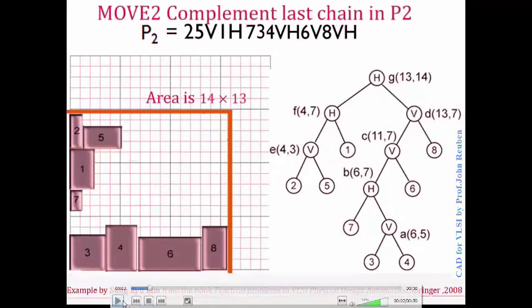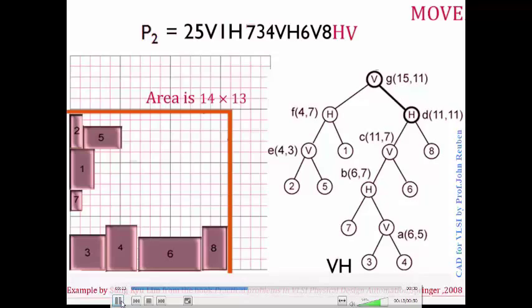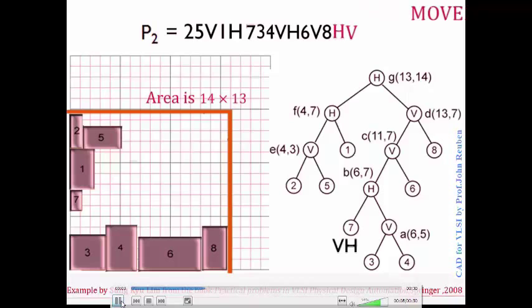Initially we had modules 3, 4, 7, 6 and 8 cut by a vertical operator. But as you apply this move, the vertical operator becomes a horizontal operator between modules 7, 3, 4, 6 and 8.